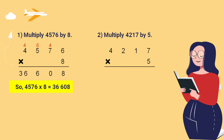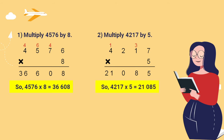Next example: multiply 4,217 by 5. First: 5 times 7 equals 35, write 5 and carry 3. Then 5 times 1 equals 5, plus 3 equals 8. Then 5 times 2 equals 10, write 0 and carry 1. Last, 5 times 4 equals 20, plus 1 equals 21. So 4,217 times 5 equals 21,085.